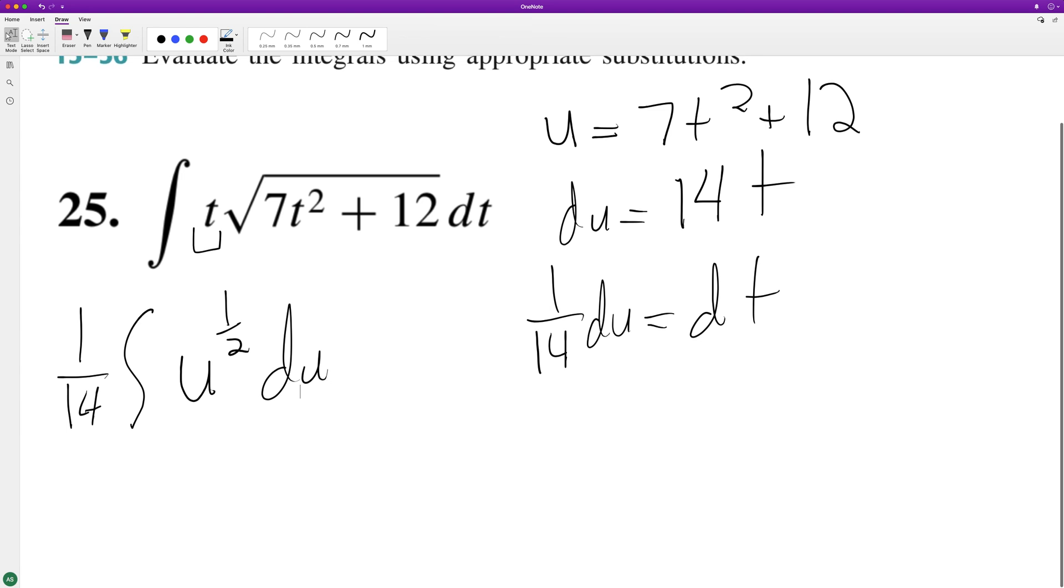And when we integrate this, we'll go down here. So we have 1/14th times u raised to the one half plus one. So we get three halves and then divide through by two thirds.